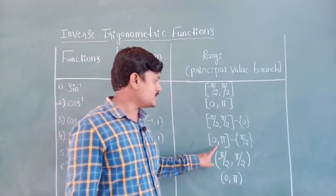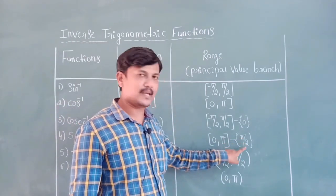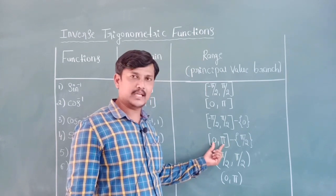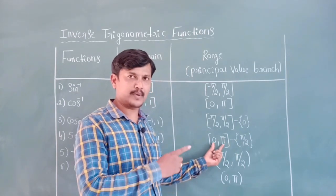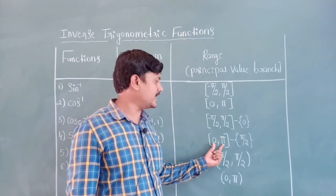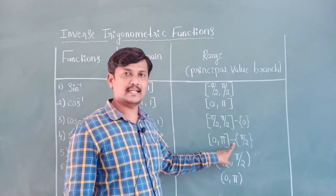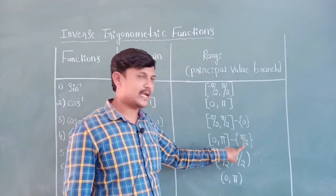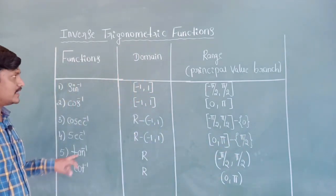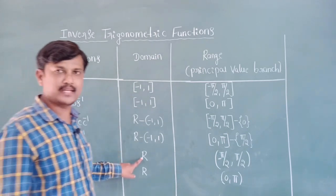Next, sec inverse: domain is R minus {minus one, one}, and range is zero to pi, excluding pi by two. This means consider all values from zero to 180 degrees, except 90 degrees, that is pi by two.